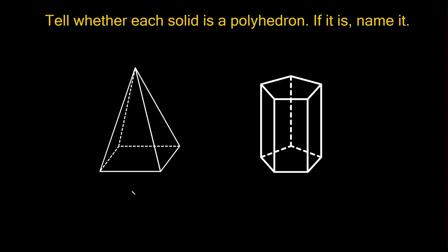Let's start with this example on the left. The first thing you want to look for is curved faces or lines, because polyhedrons do not have curved faces or lines. This shape doesn't have any curves — everything is just made up of solid straight lines. So this is a polyhedron, and the way that you name it is first by naming the shape of the base.